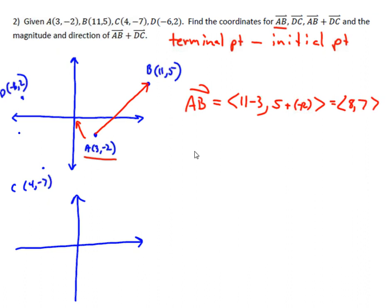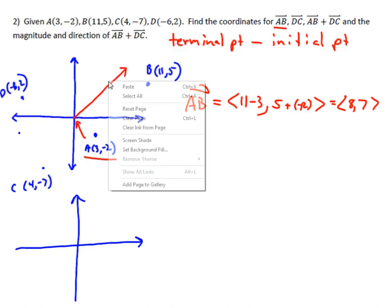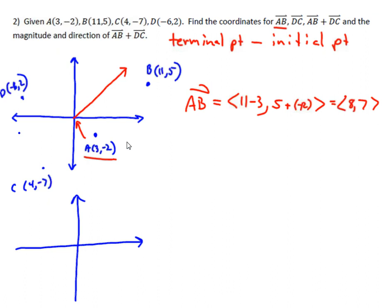If I were to move this over - and my points are all very much estimates here because we don't really care about location too much, we just want to be able to do the math - that means that the ending point now would be (8, 7), if that's another way to look at that vector.